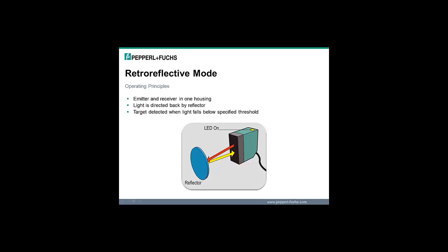Similar to a diffuse mode sensor, a retroreflective mode sensor will have both the emitter and receiver elements contained within a single housing. But rather than evaluating the intensity of the light reflected back from the object, light from the emitter is directed back to the receiver by a reflector. When an object breaks the established beam between the sensor and the reflector, the object is detected.